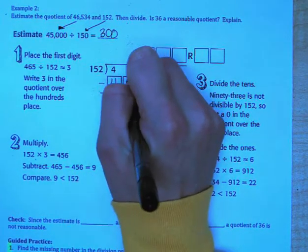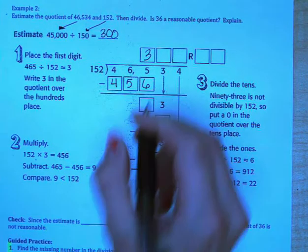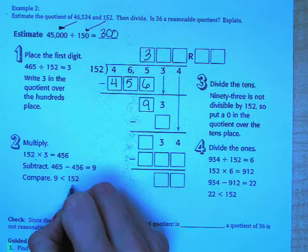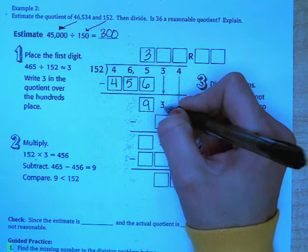So we can write that in and subtract 465 minus 456 which equals 9. 9 is less than 152 so we can continue dividing. Bring down our 3 and we have 93.